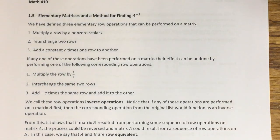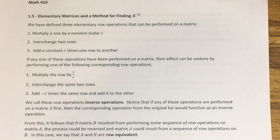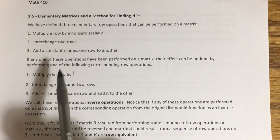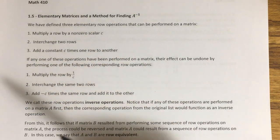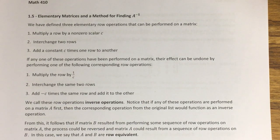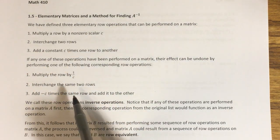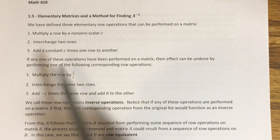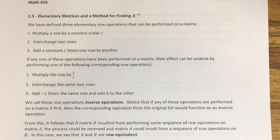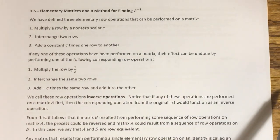Similarly, if you interchange any two rows and decide you want to undo that, you can just interchange the same two rows again and it'll put them back in their original positions. And if you added a constant C times one row to another, then take that same row but multiply by negative C and add it to that second row again, and it will remove the result of the original step. So basically, any one of these elementary row operations is reversible or invertible by another row operation. We call those inverse operations.